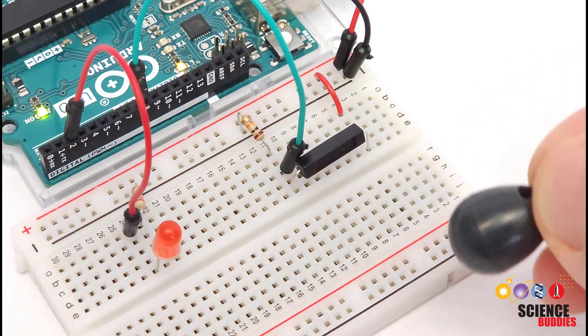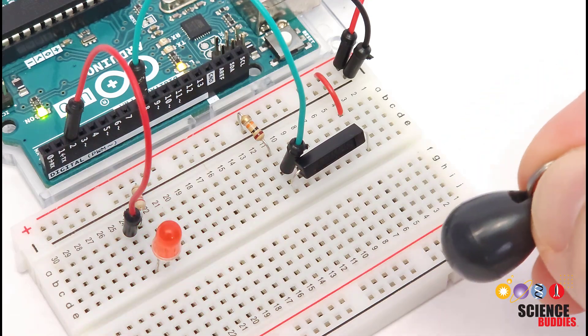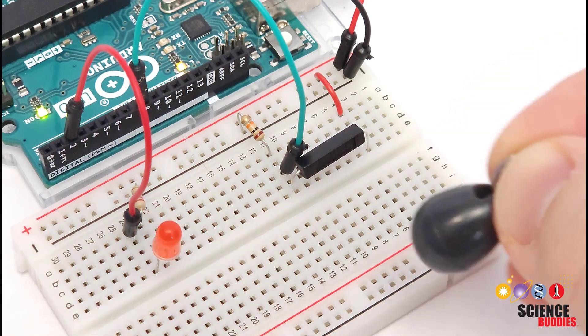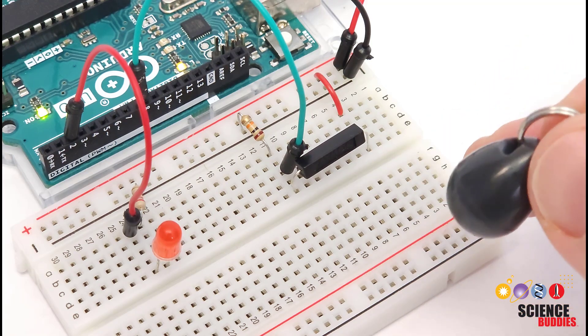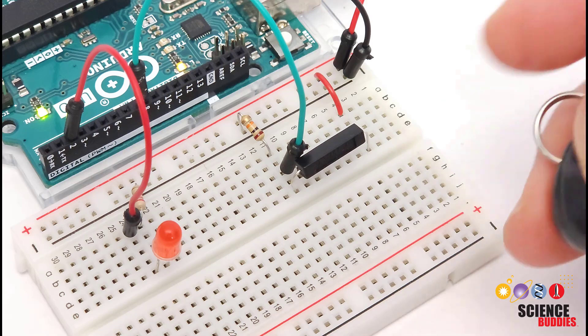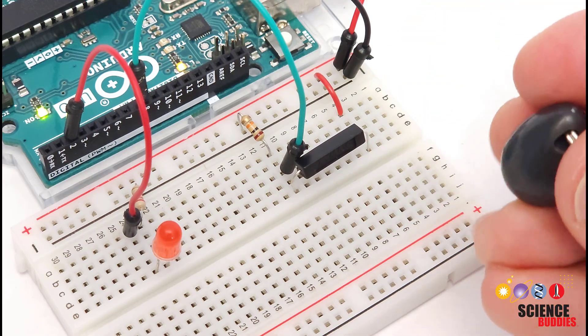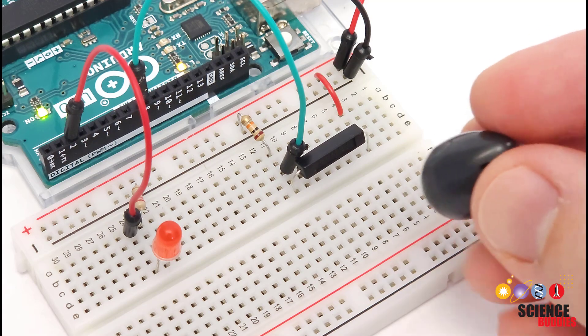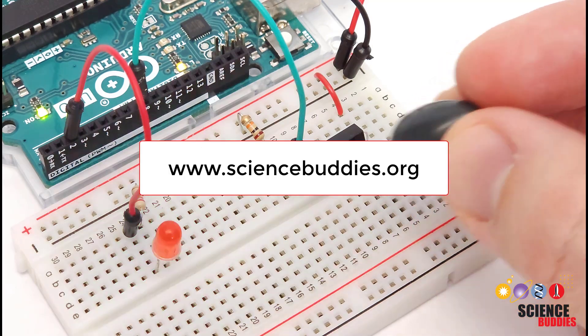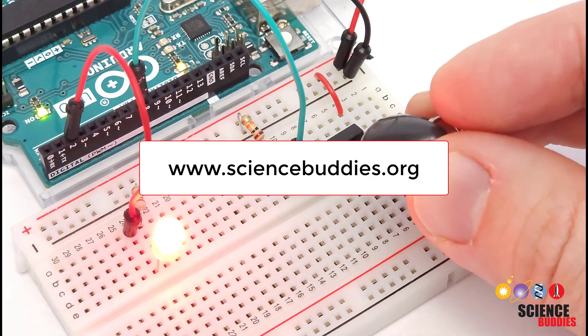So again, these switches open up an interesting range of non-contact sensing possibilities for your Arduino projects like detecting a magnetic tag on a pet collar. For a list of science projects you can do with an Arduino, check out the links in the video description. And for over a thousand other fun hands-on projects in all areas of science and engineering, visit our website, www.sciencebuddies.org.